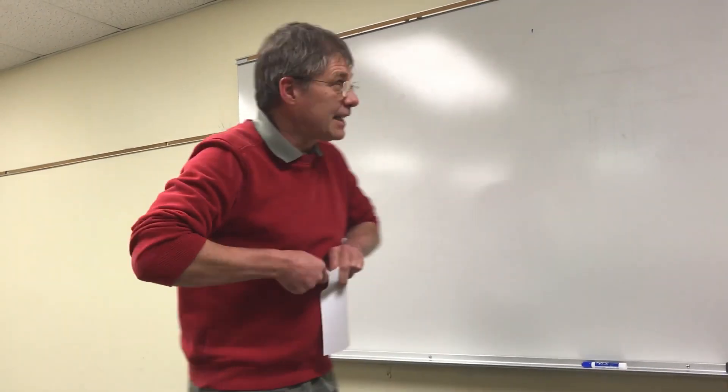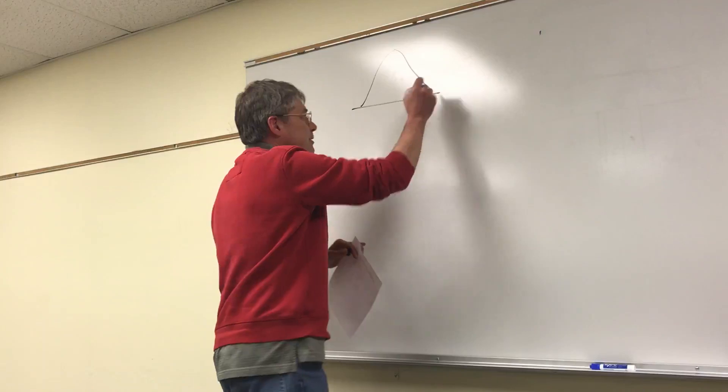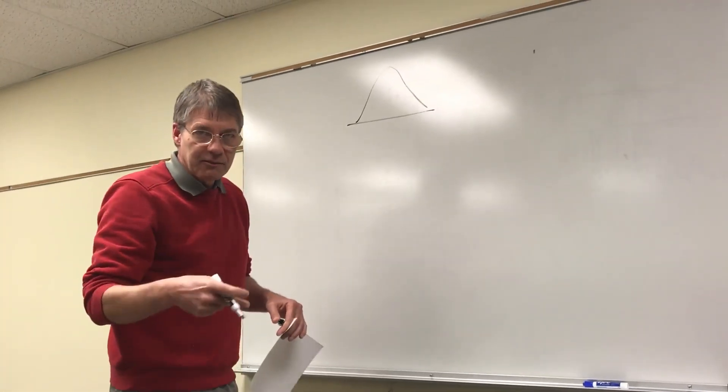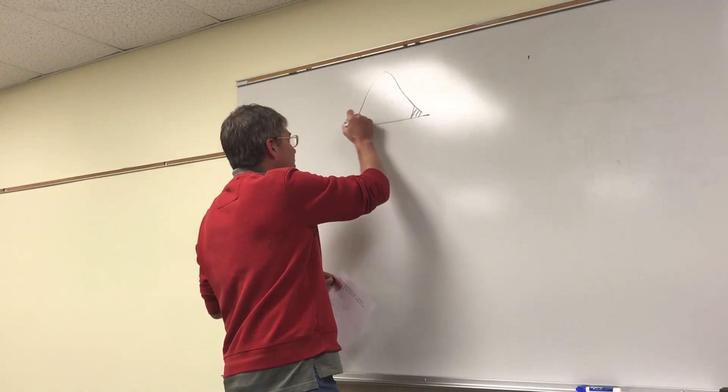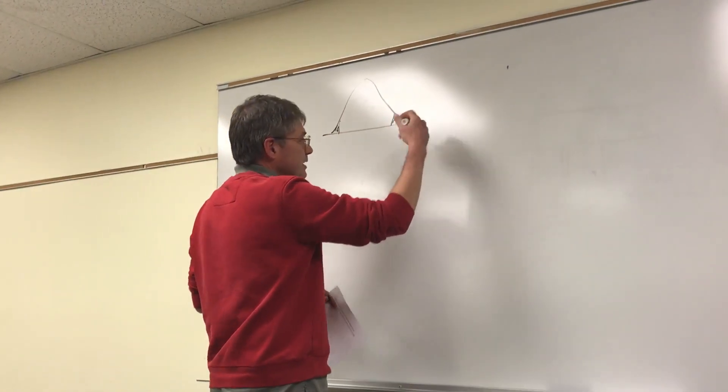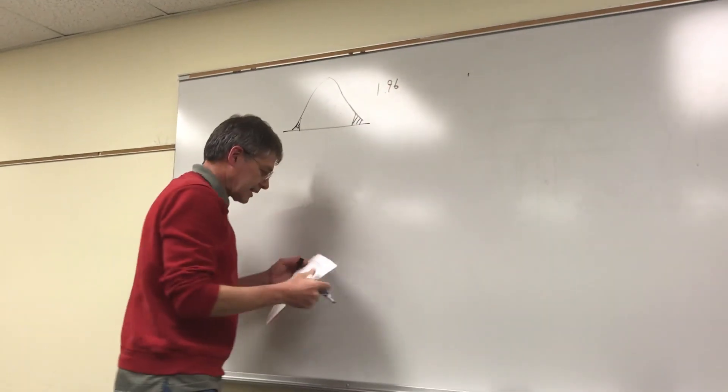Where that came from is basically, even though it's a proportion, it will still follow the normal curve. So we need 2.5% there, 2.5% there, which gives us 1.96. That's where that came from.